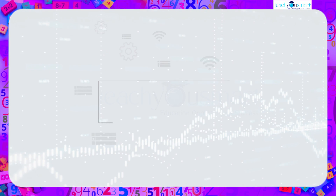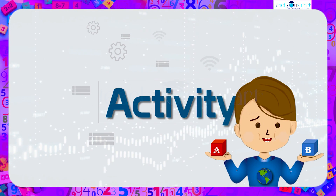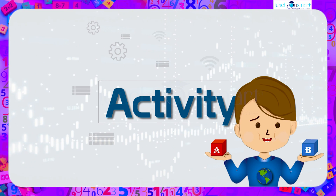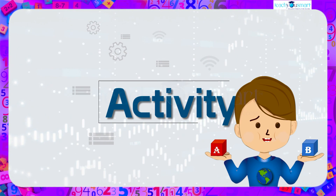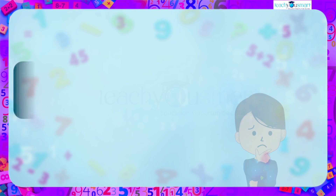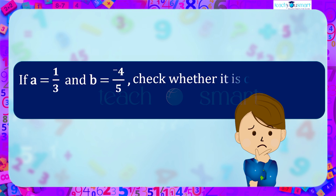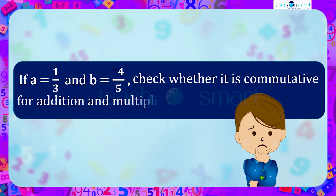Now let's check how much you understood by doing an activity. If a equals one by three and b equals minus four by five, check whether it is commutative for addition and multiplication.